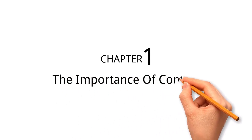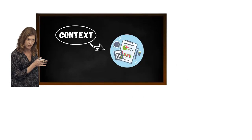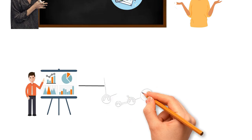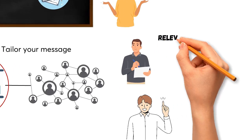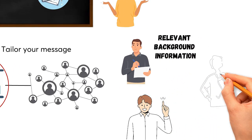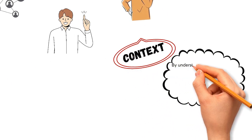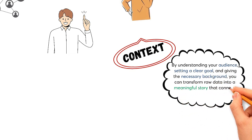Chapter 1 of Storytelling with Data is titled The Importance of Context. In this chapter, the author highlights that context is essential when showing data. Without it, data is just a collection of numbers and charts that don't tell a meaningful story. The main point is to present your data in a way that connects with your audience and communicates your message. Always consider who will be viewing your data and what they care about, as this helps you tailor your message.